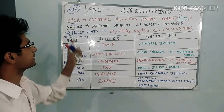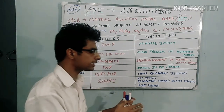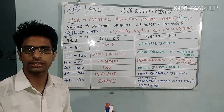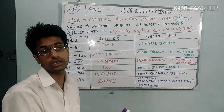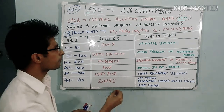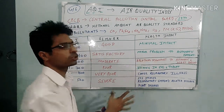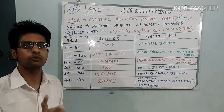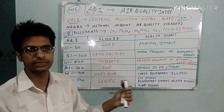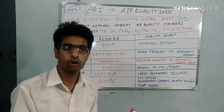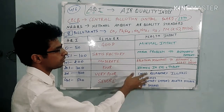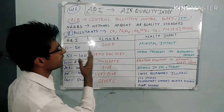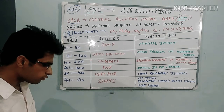Before starting this topic, it is most important for CSIR-preparing students or ICMR-preparing students, because two or three questions are asked in ICMR and one question was asked in the previous CSIR examination — worth four marks — in the form of column matching, based on the Air Quality Index.